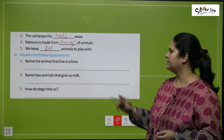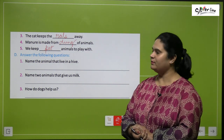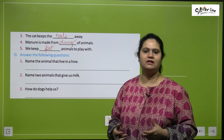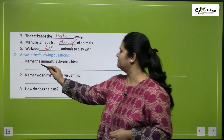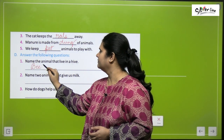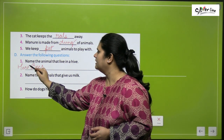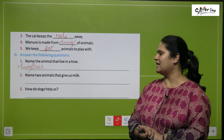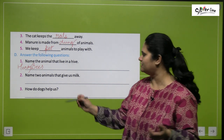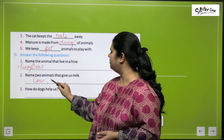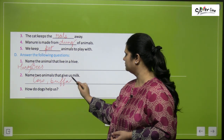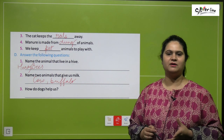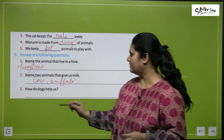Answer the following questions. Number one: name the animal that lives in a hive — honeybees live in a hive. Number two: name two animals that give us milk — cow and buffalo. Number three: how do dogs help us? They guard our house.